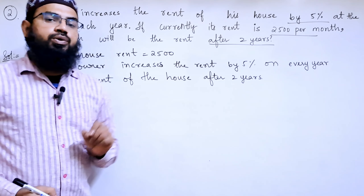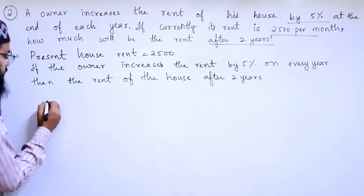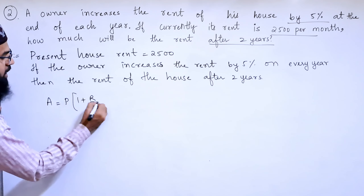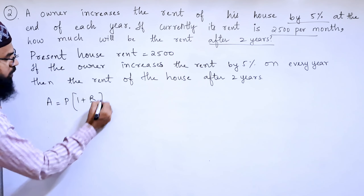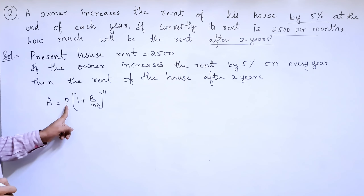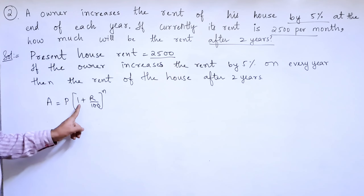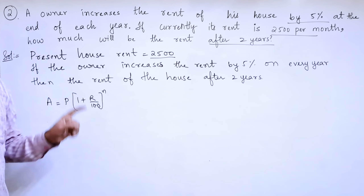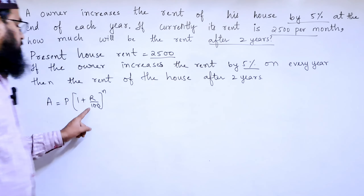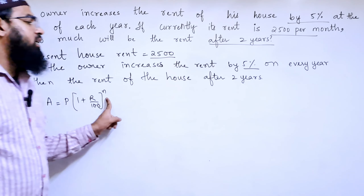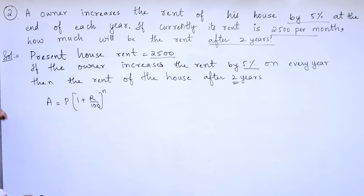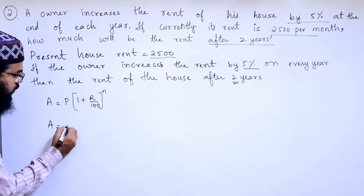The formula we are going to use here is: A equals P into (1 plus r by 100) whole to the power n. Here A is the amount, P is the principal amount which is ₹2,500, r is the rate of interest that is 5%, and n is the number of years.